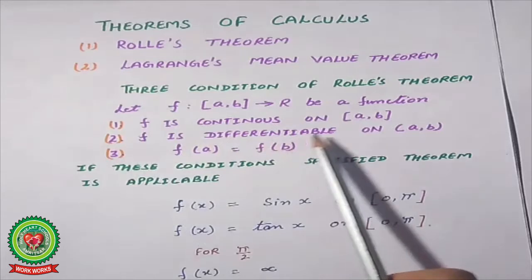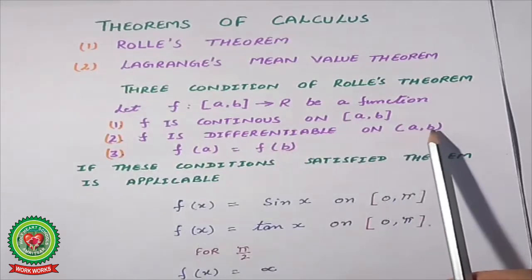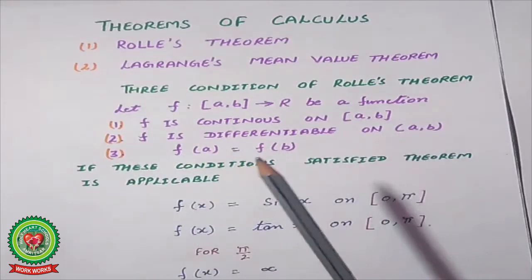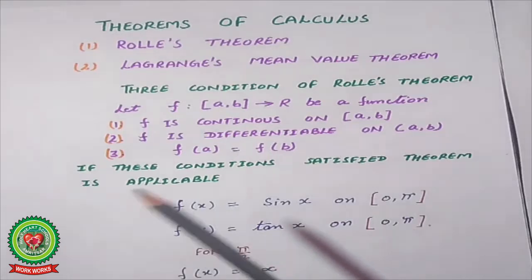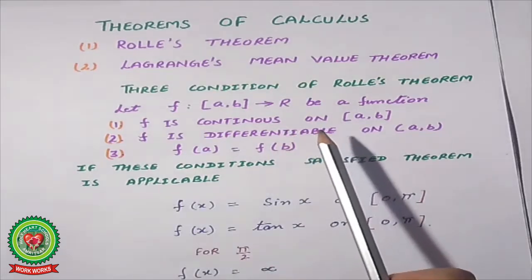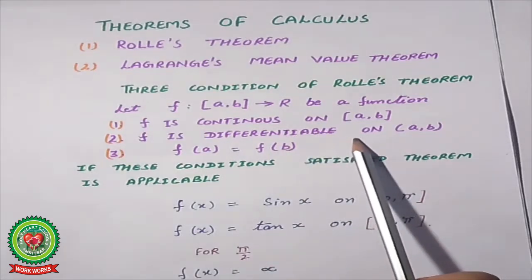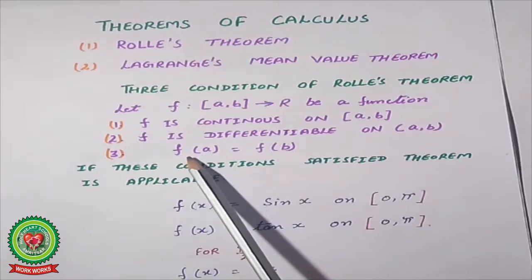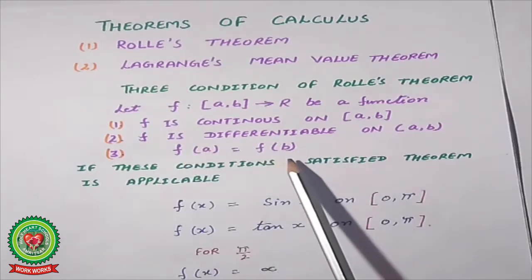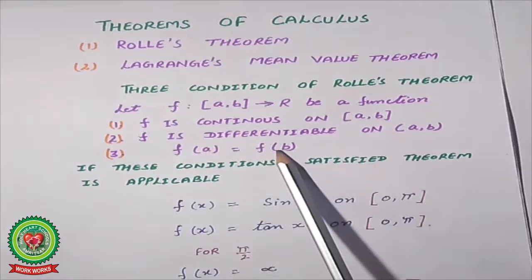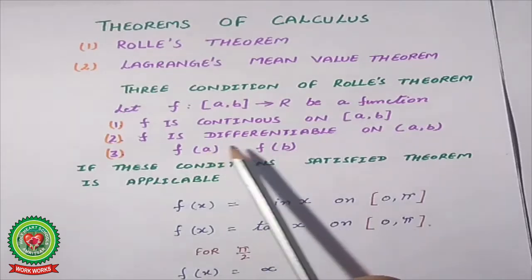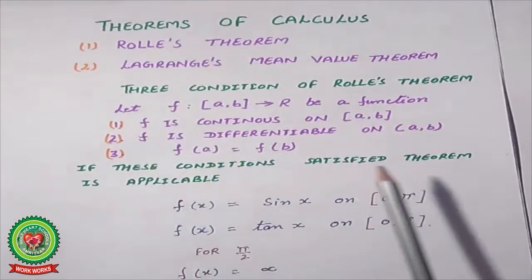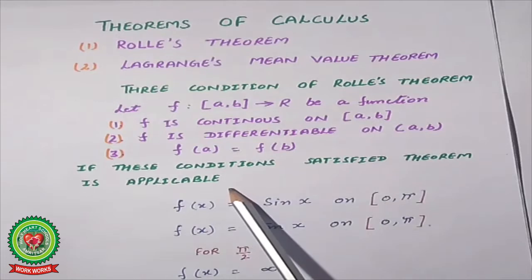Second condition: f is differentiable on the open interval (a, b) — meaning a and b are not included, but any value in between, when differentiated, also gives an answer. Third condition: if we substitute the first endpoint value and then the second endpoint value into the function, the answers must be equal. If these three conditions are satisfied, then Rolle's theorem is applicable.